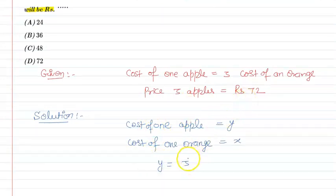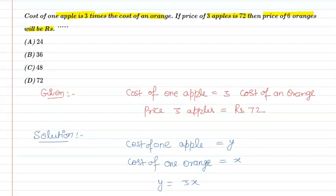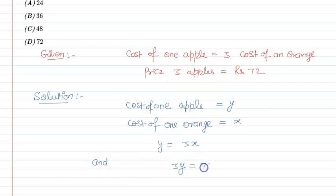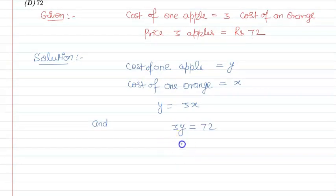So cost of one apple, that is y, is three times the cost of one orange. Therefore y = 3x. The second condition says the price of 3 apples is 72, so 3y = 72.